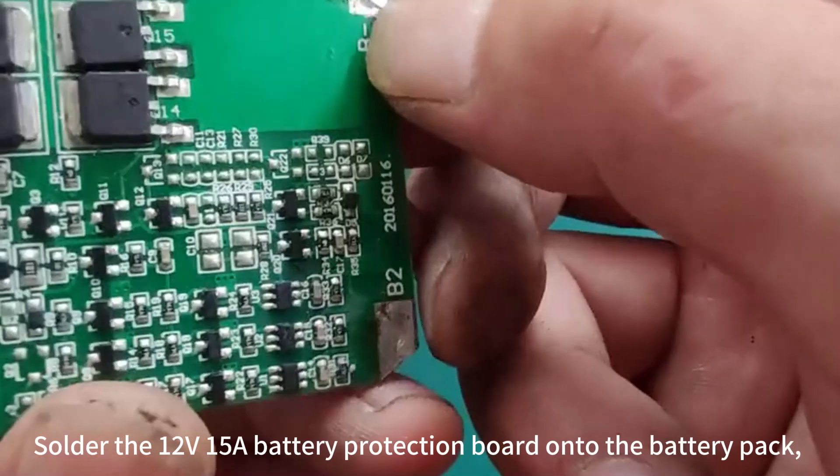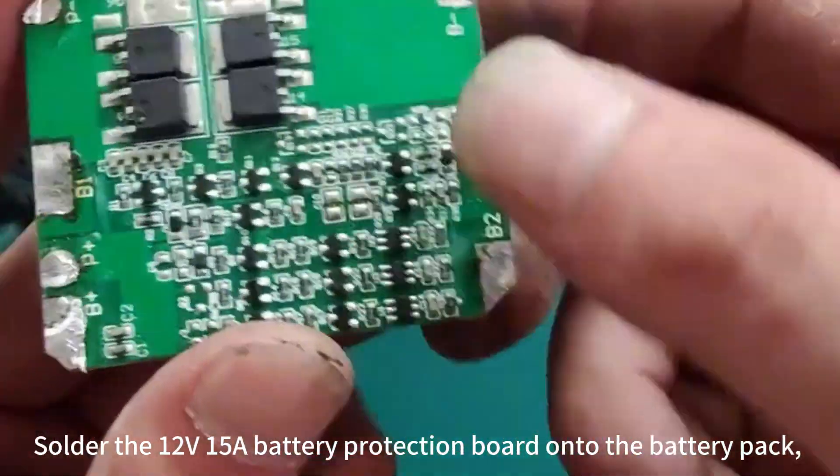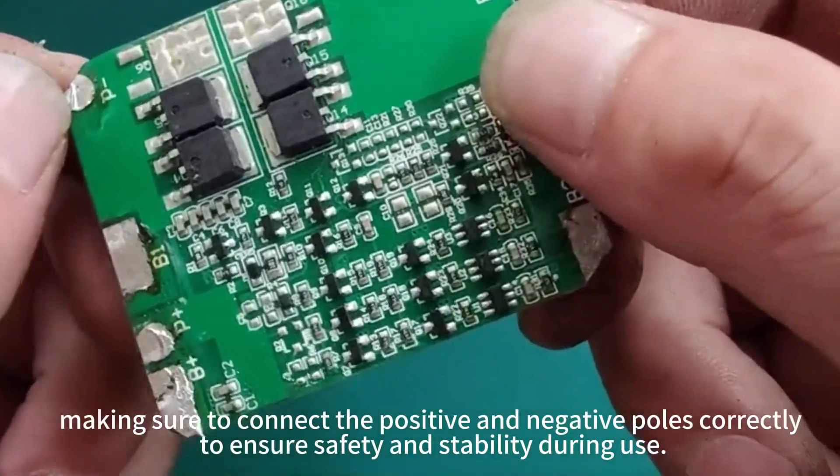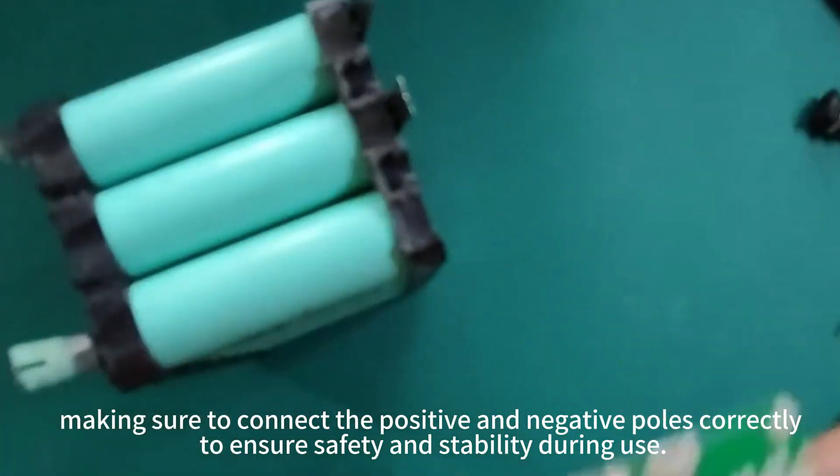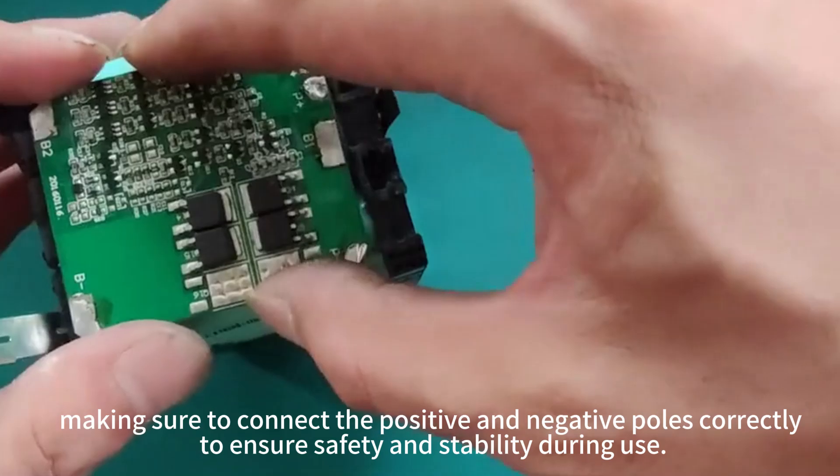Solder the 12V 15A battery protection board onto the battery pack, making sure to connect the positive and negative poles correctly to ensure safety and stability during use.